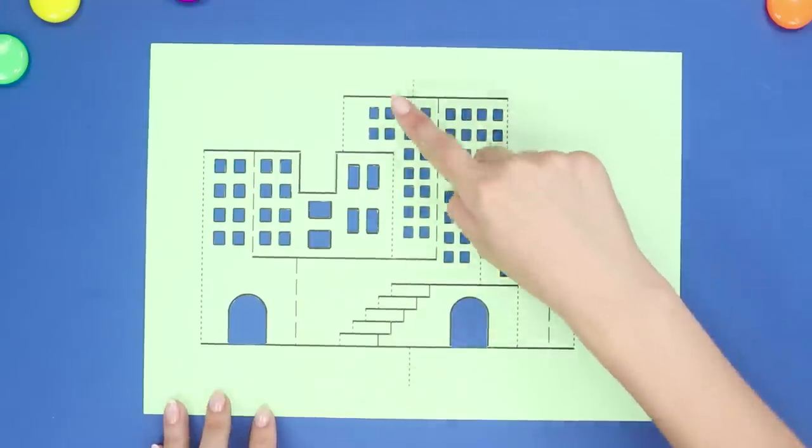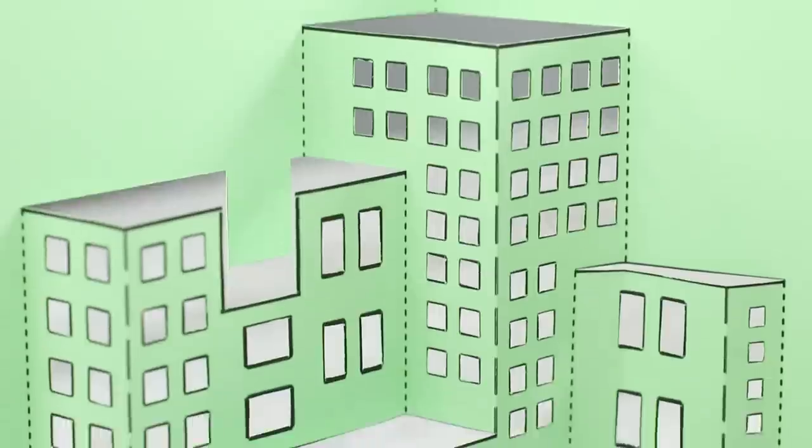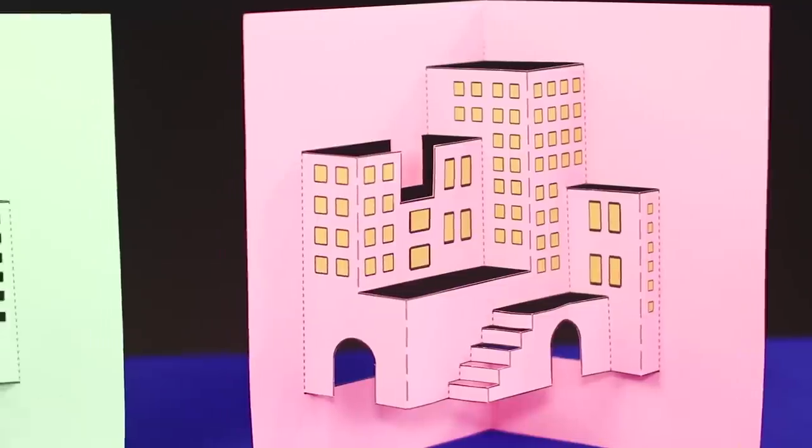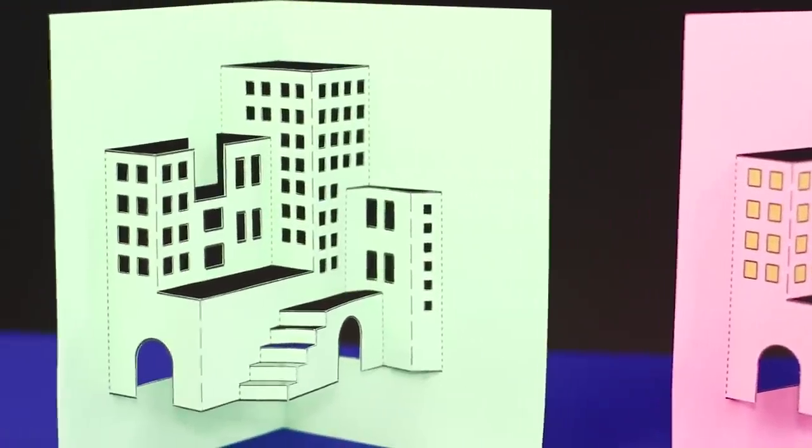Accurately bend the picture on the dotted line. For clarity, you can paint the windows in yellow instead of cutting them out. A magical three-dimensional city grew up on a regular sheet of paper.